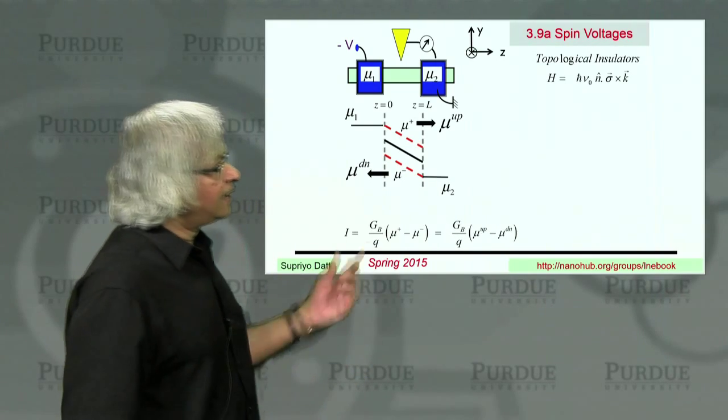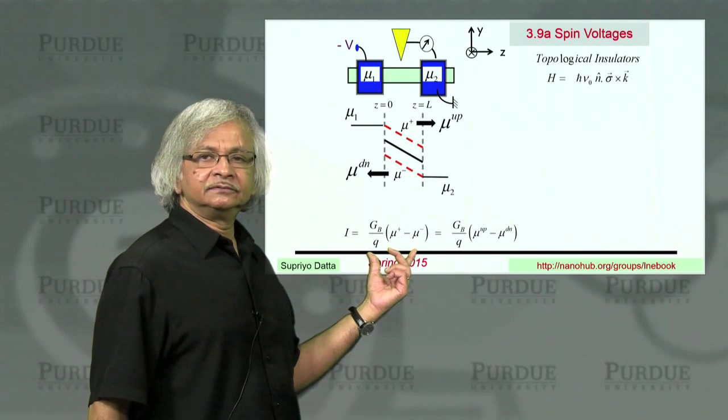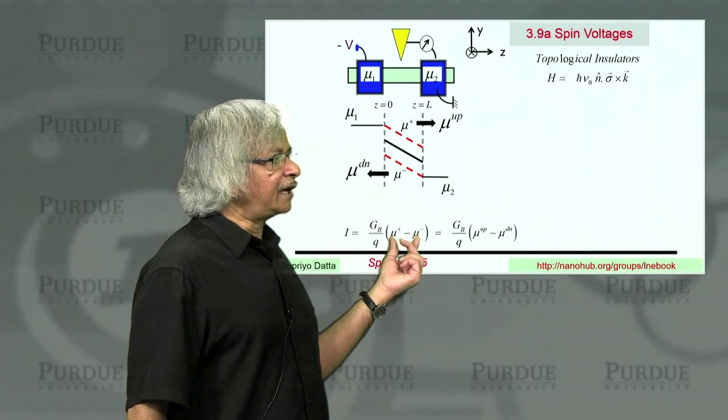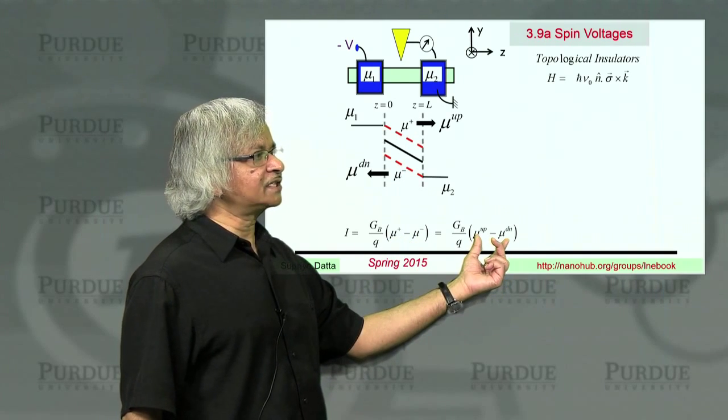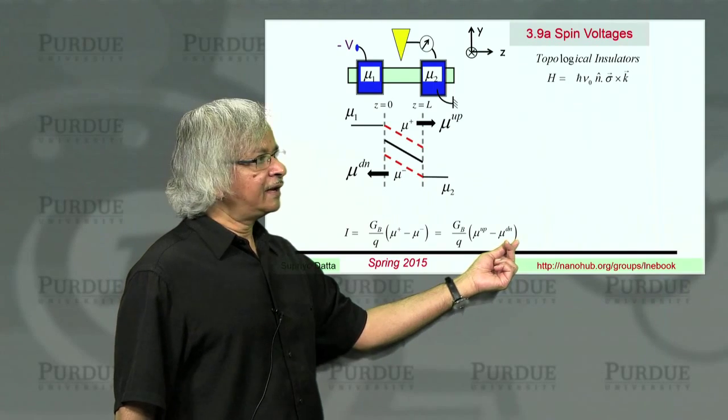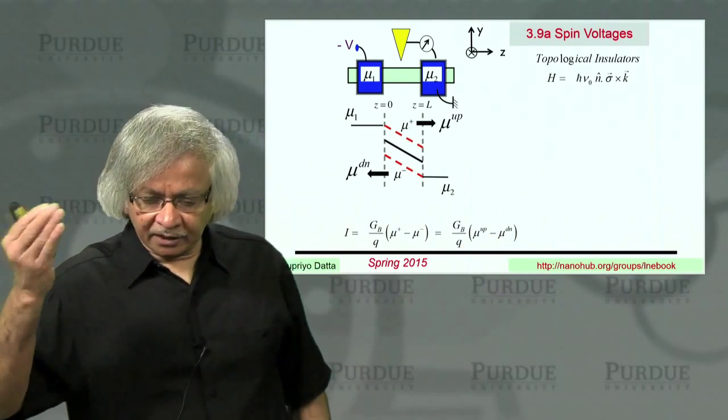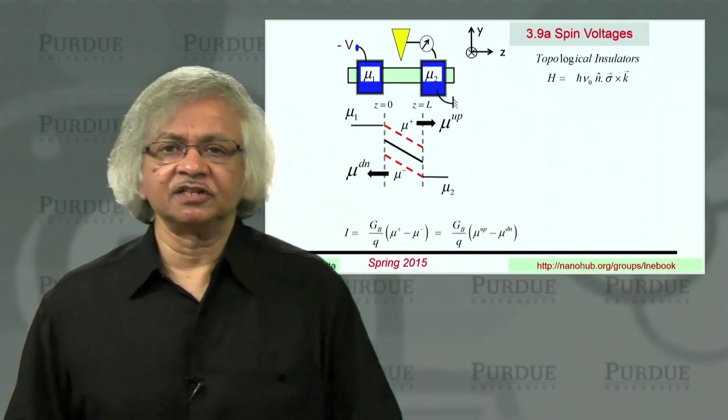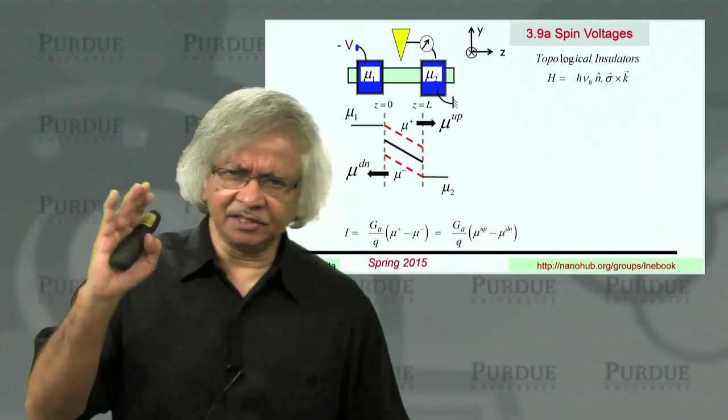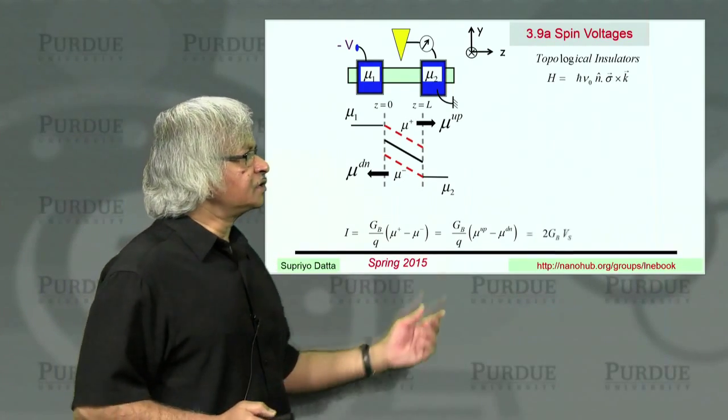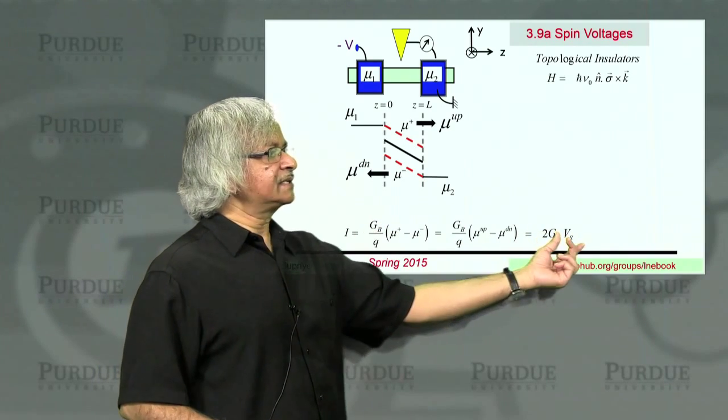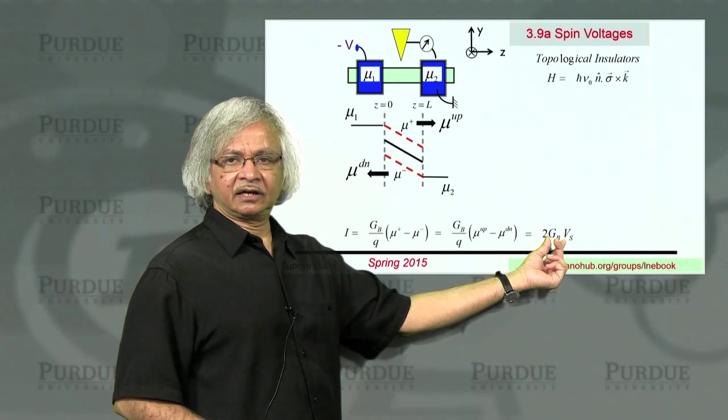So what that means is I could write the current, which is usually this difference in quasi Fermi levels, but I could write it as the difference between the quasi Fermi levels of up and down. And this difference between upspin and downspin potentials, that's what's called the spin potential. And we have defined it with a factor of 2. And that's just a matter of convention.